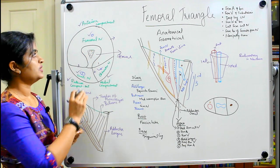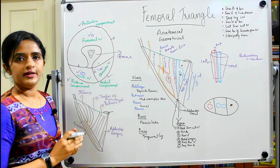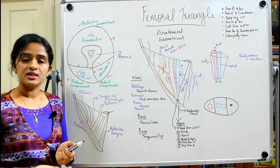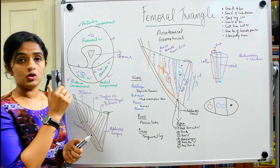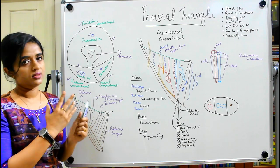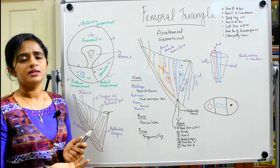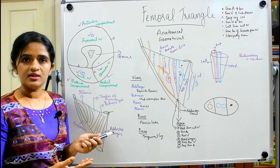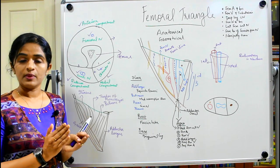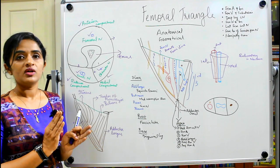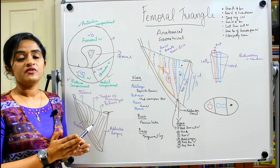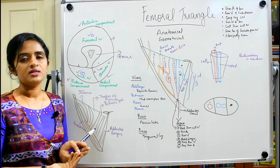This is an overview of the thigh — the anterior compartment has the femoral nerve. Today's topic is the femoral triangle. It is a very favourite question for most exams, both theory and entrance. For entrance you will get MCQs on which branches are within the triangle, which muscles form the boundary, and so on. In this session we will cover the boundaries, important contents, and some applied aspects of the femoral triangle.